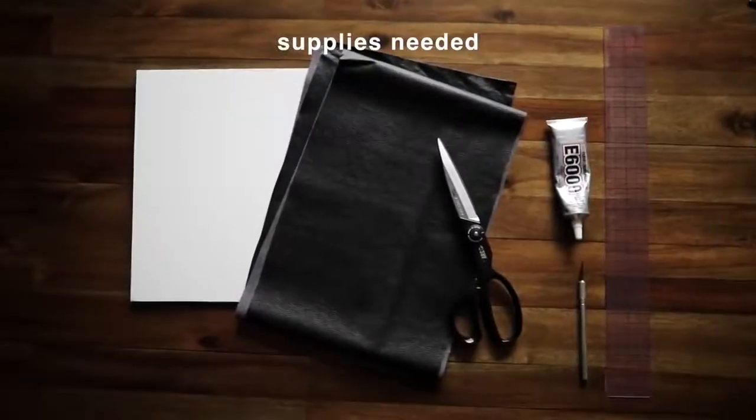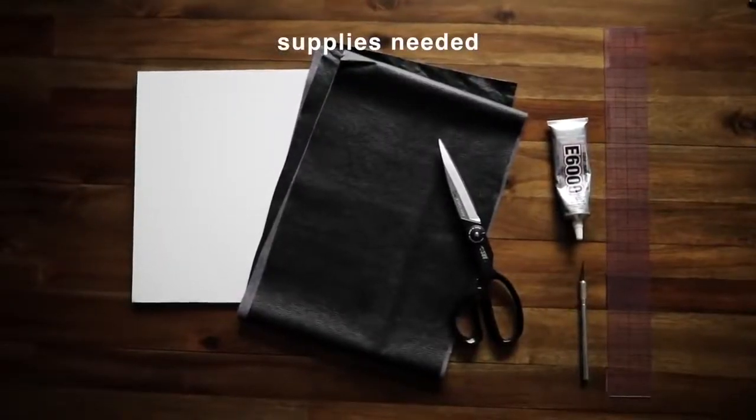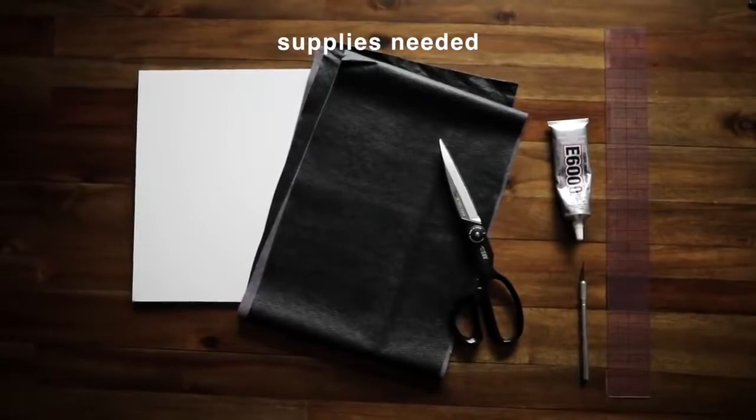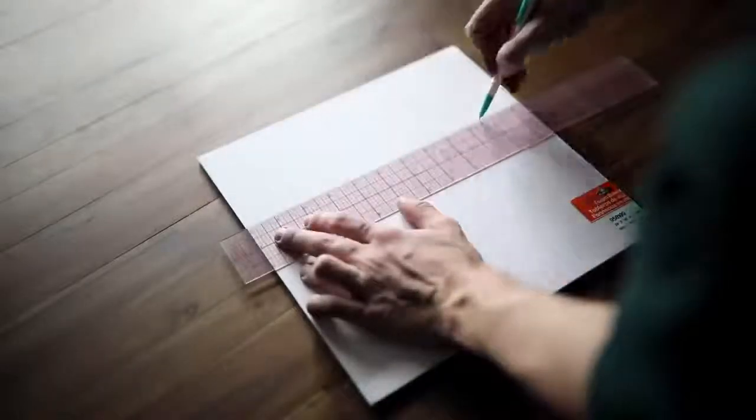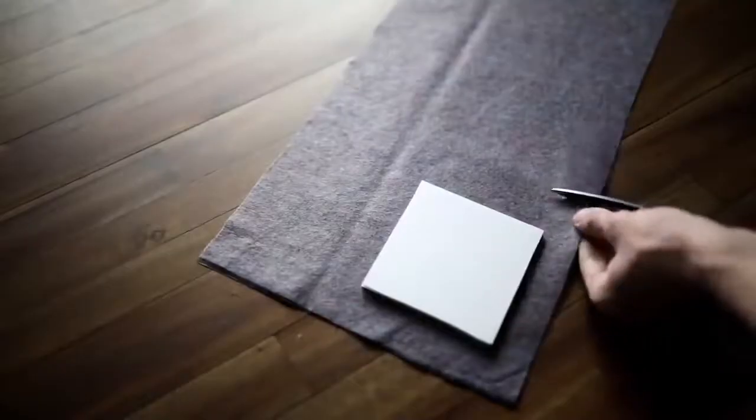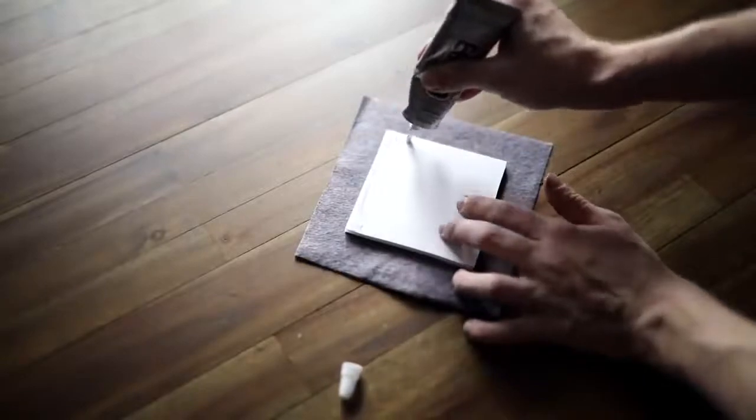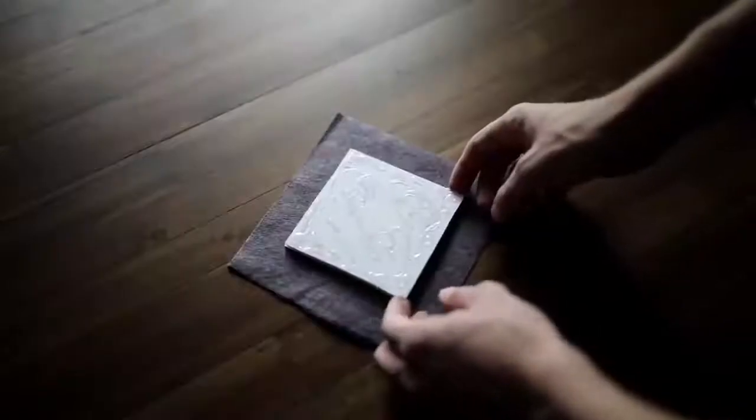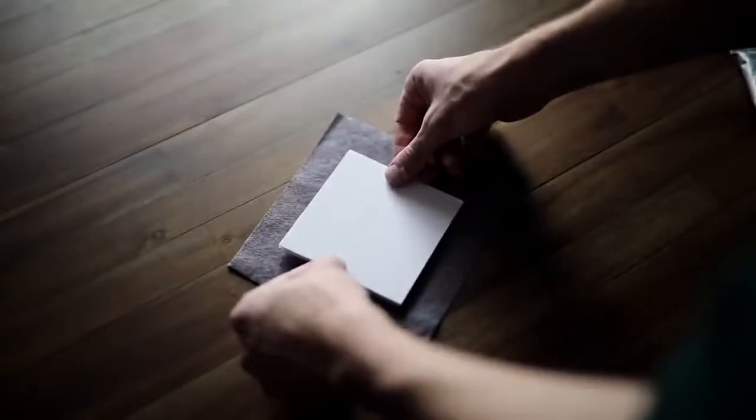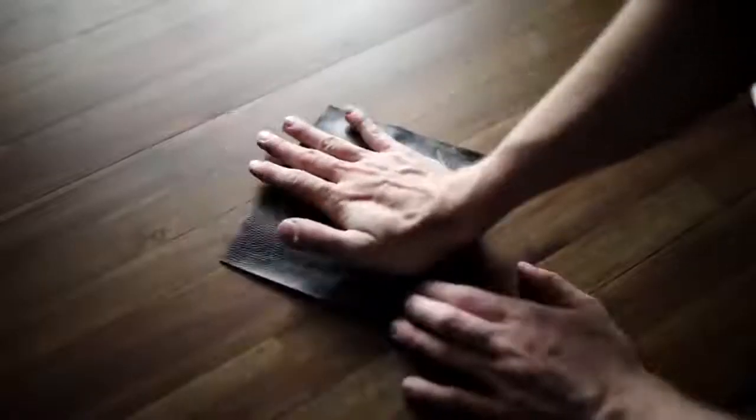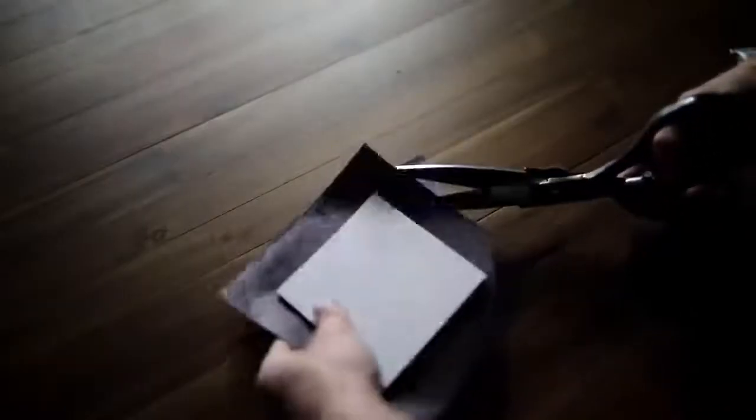Would you believe me if I told you these coasters cost under two dollars to make? All you're going to need is some foam core, some pleather fabric, scissors, an exacto knife, ruler, and E6000 adhesive. You're first going to start by taking your foam board - this is literally like that project board you use for science projects, a foam-based one - and you're going to cut them into four by four inch squares. I found that this was the nicest size for a coaster. Then I used this pleather fabric I found at Joann's on sale for a dollar for a quarter yard of it and just cut out with about an inch around each edge, very roughly.